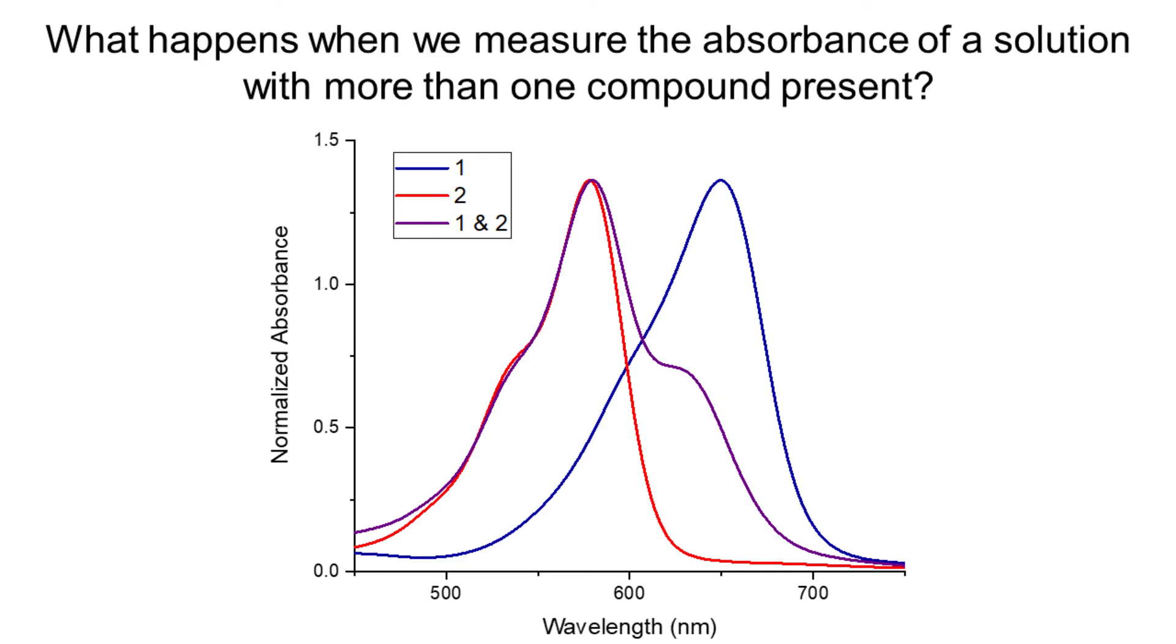When we're taking a UV-Vis spectrum, it's best to try, if at all possible, to simply isolate one pure component and take the individual spectrum of that species.